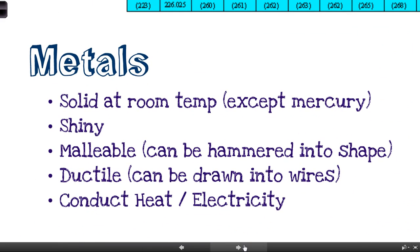So just while we're talking about that, metals generally have these characteristics. They're solid at room temperature, except the only exception there is mercury. They're shiny, they're malleable. That means that they can be hammered into a shape. Malleable means basically you can bend it without breaking it. Ductile means it can be drawn into wires, so we can stretch it without breaking it. And it conducts heat and electricity.